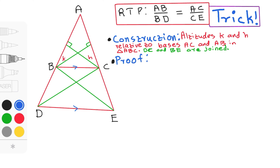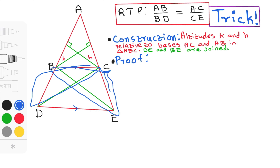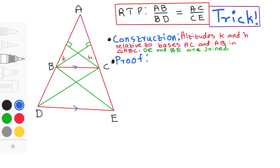Those middle points will also be the top vertices for our triangles. When I'm looking at triangle ABC, my top vertex will be C. When looking at triangle ACB, my top vertex will be B. When looking at triangle BDC, my top vertex will be C. And when looking at triangle CEB, my top vertex will be B.